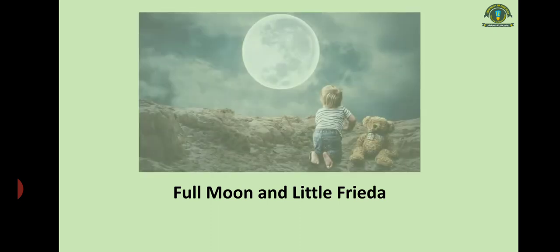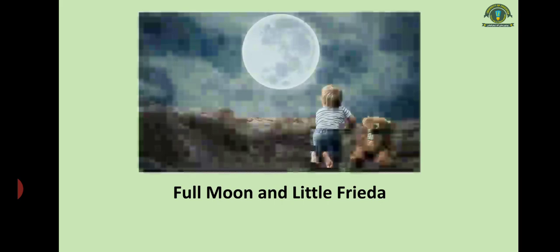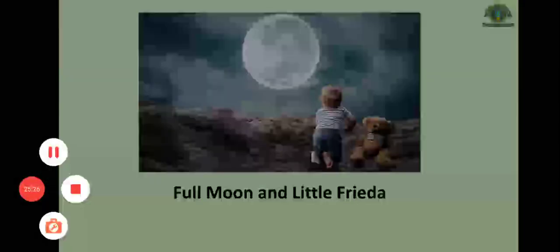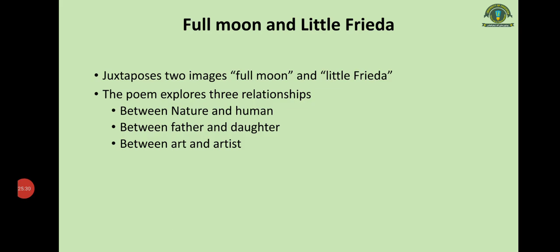The next poem is 'Full Moon and Little Freda.' Little Freda was the name of Ted Hughes and Sylvia Plath's daughter. The title juxtaposes two important images: the full moon and little Freda. The poem explores three relationships: between nature and human (nature being represented by moon), between father and daughter, and between art and artist — the last being an important theme common to many of his poems.